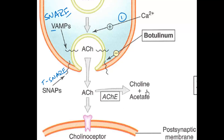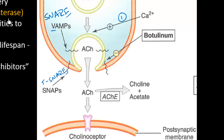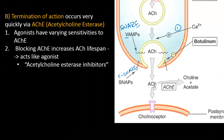Acetylcholinesterase metabolizes acetylcholine into choline and acetate. Importantly, different drugs that act like acetylcholine will have different sensitivities to acetylcholinesterase. If we block acetylcholinesterase, that's a very nice drug target — we can indirectly increase acetylcholine levels specifically at nerve terminals, increasing binding to the cholinoreceptor. Drugs that do this are called acetylcholinesterase inhibitors.